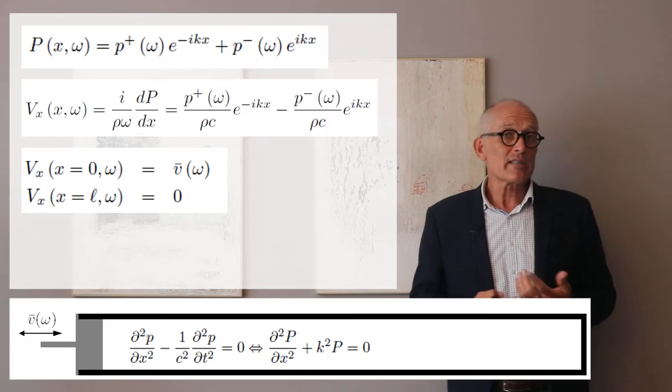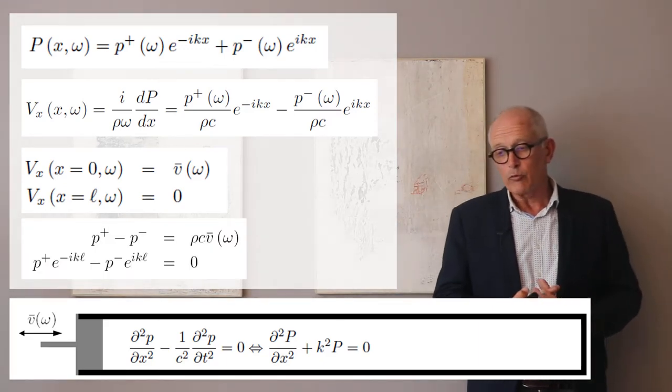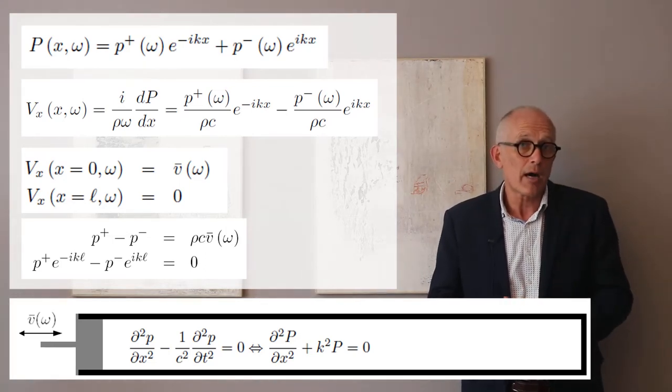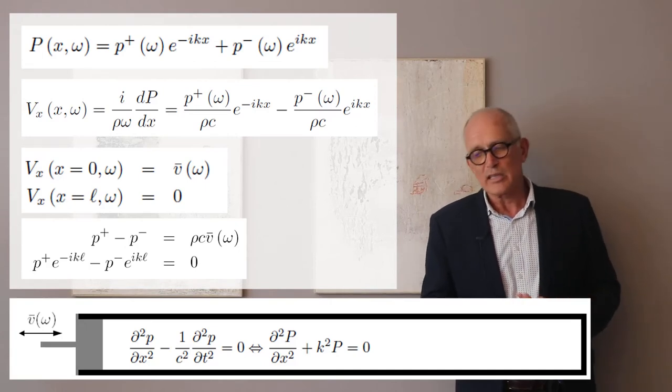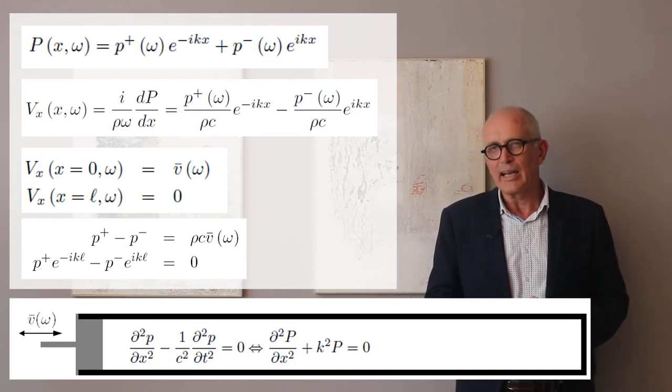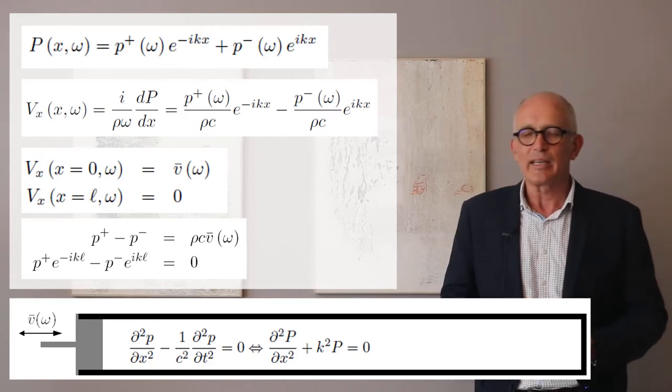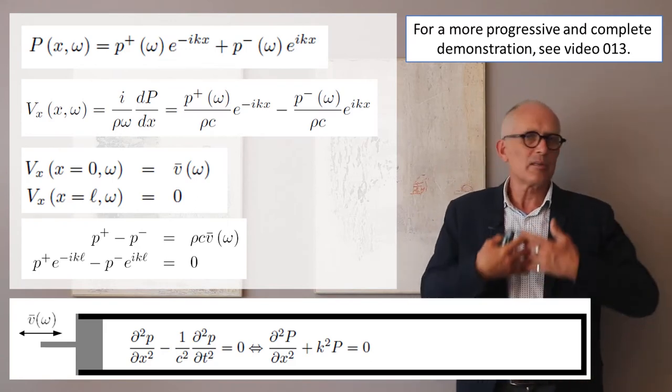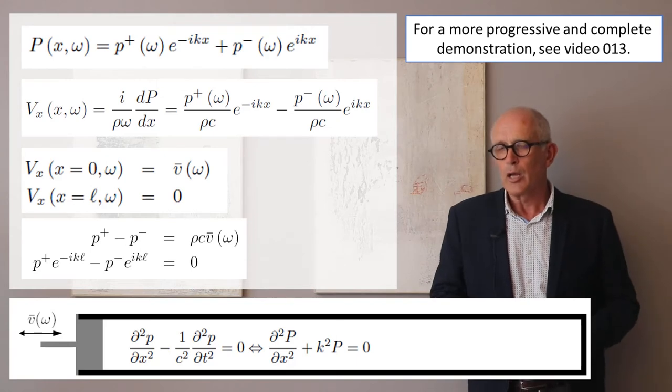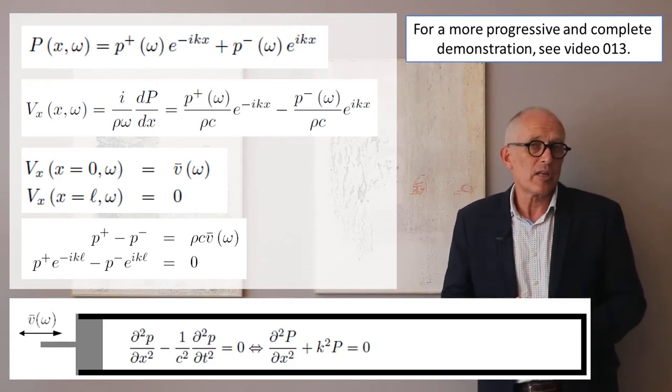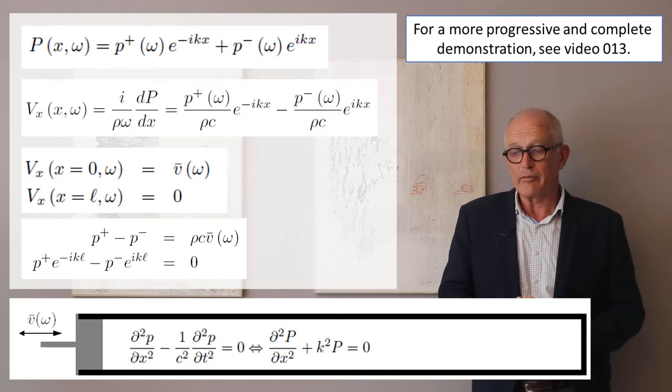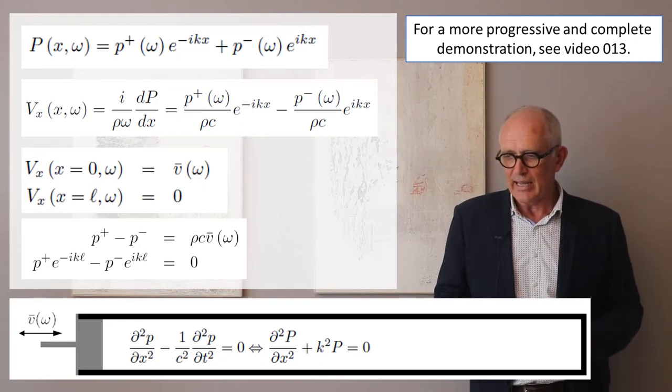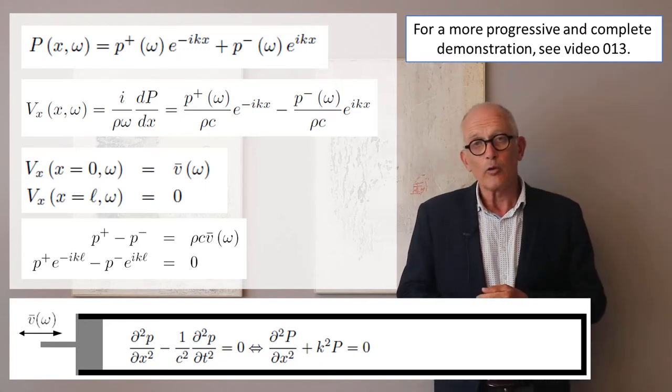I can express that in terms of p plus and p minus. The first condition tells me that p plus minus p minus equals rho c v bar. The second condition says p plus exponential minus ikl minus p minus exponential ikl equals zero. I fully solved that in a separate video. This is a system of equations for p plus and p minus that we can solve to obtain their value as a function of rho c v bar, omega, and L.